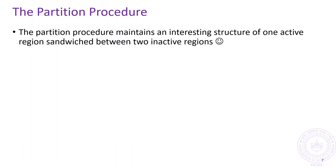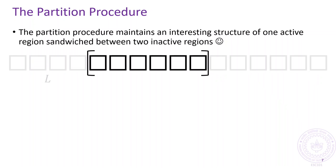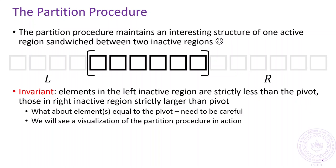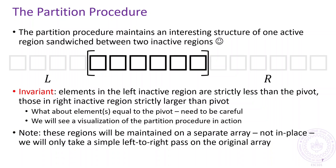Let us develop the partitioning algorithm now. This algorithm will proceed by maintaining an active region that is sandwiched between two inactive regions. We will maintain an invariant that elements in the left inactive region will always be strictly smaller than the pivot and those in the right inactive region will always be strictly larger than the pivot. We will take care of elements equal to the pivot later. Note that this will not be an in-place algorithm.